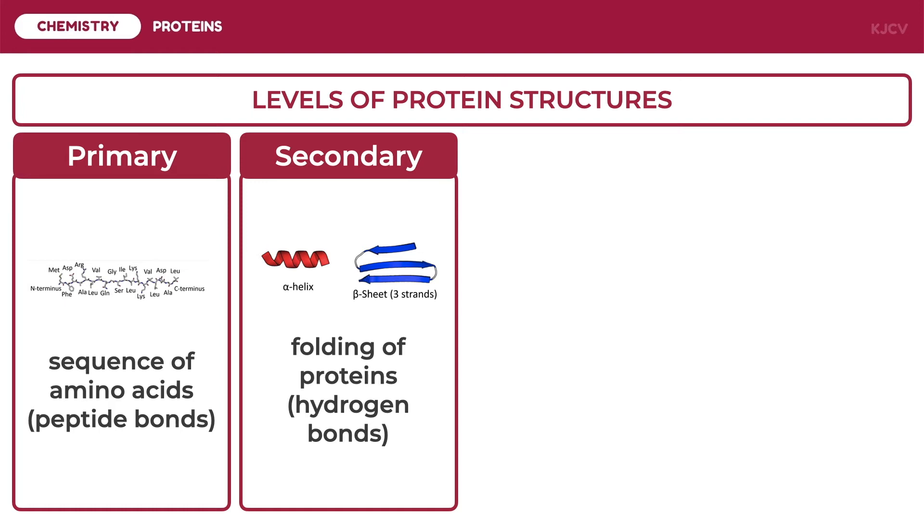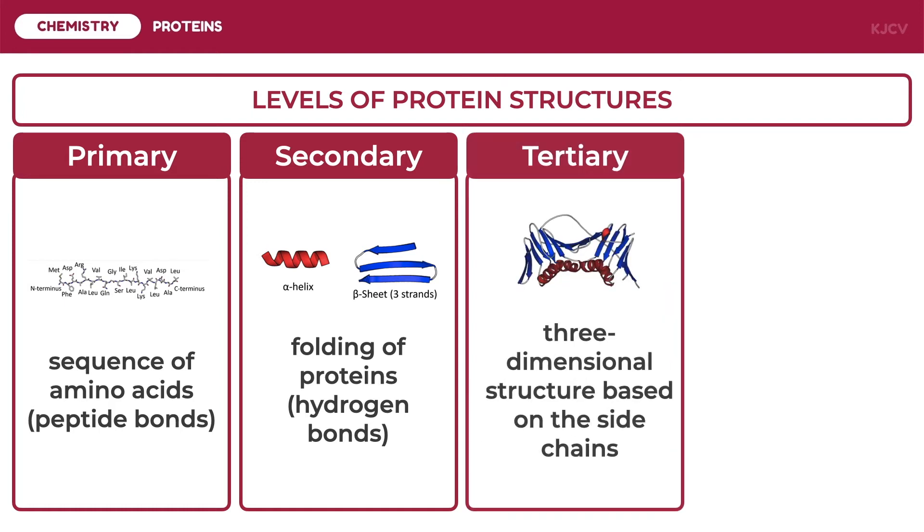The overall shape of a polypeptide results when there are interactions between the side chains or R groups of the various amino acids from the secondary structure. This is called the tertiary structure.